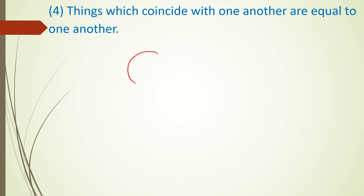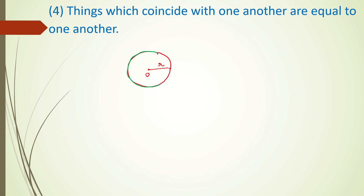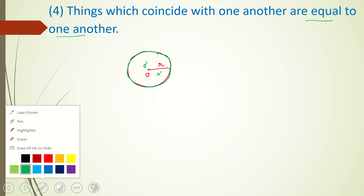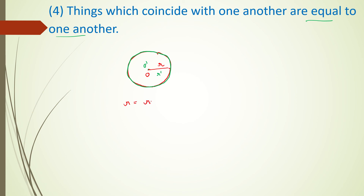Next, things which coincide with one another are equal to one another. Suppose I have a circle with center O and radius R, and another circle with center O' and radius R'. If these two circles coincide - meaning one lies exactly on top of the other - then they are equal to each other, meaning the radii of both circles are equal.